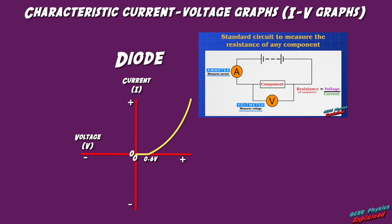After 0.6 volts, the diode allows current to flow, but in a non-linear way as shown by the graph being curved.